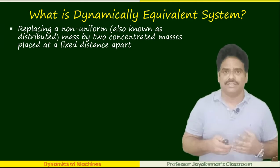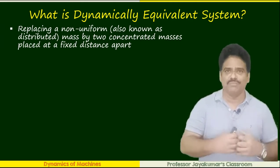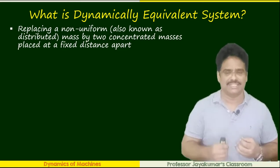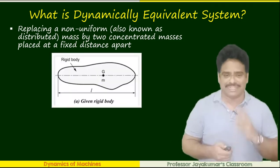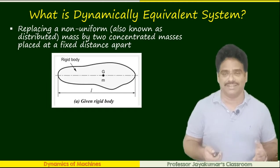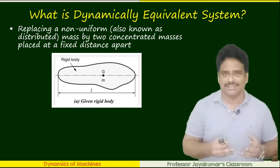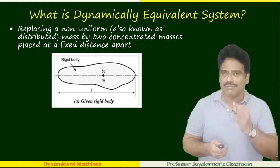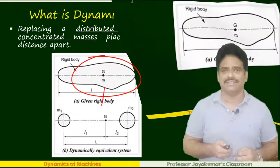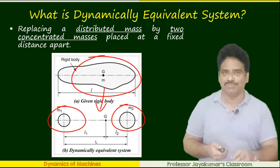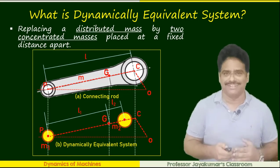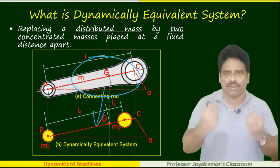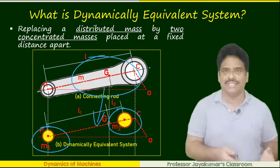What is a dynamically equivalent system? When we have a distributed non-uniform rigid body, we replace that mass by two concentrated masses placed at a fixed distance apart. Let us take a rigid body with mass m and length L. As you can see, this is a distributed mass non-uniform rigid body. In this case, the total mass m can be replaced by two concentrated masses m1 and m2. The same logic applies to a connecting rod — the mass of the connecting rod can be replaced by two concentrated masses m1 and m2.